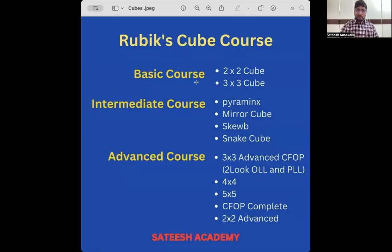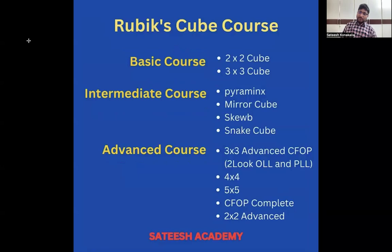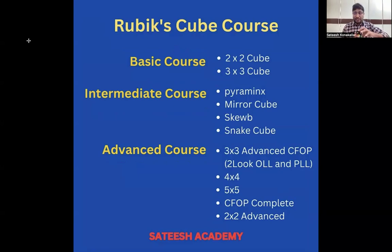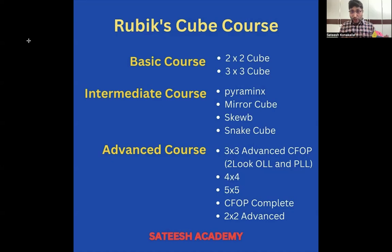Before going further, let me tell you what cubes we are teaching in this course. We are dividing into three stages: basic, intermediate, and advanced. The basic is nothing but a two-by-two cube and three-by-three cube. This is my two-by-two cube — a super quality cube. In the basic stage: two-by-two cube, three-by-three cube, pyramid cube, mirror cube, skewb, and snake cube. These are six cubes.